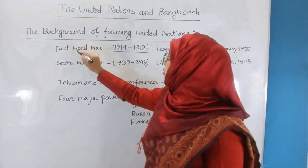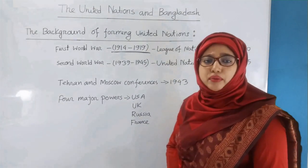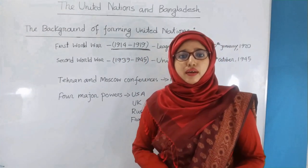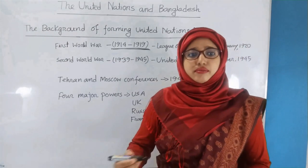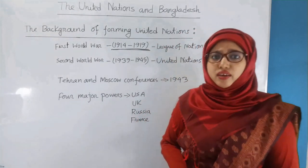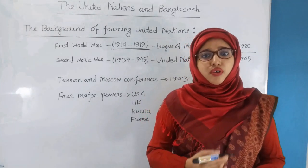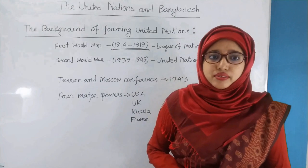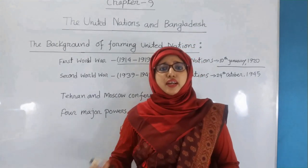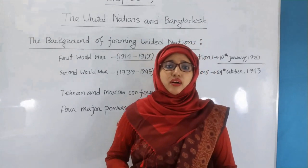The First World War lasted from 1914 to 1919. People observed huge devastation during this period. Consequently, the peace-loving people formed the League of Nations on 10th January 1920. The League of Nations was formed in order to maintain international peace and security. But the onset of World War II showed that the League of Nations had failed to maintain world peace due to its organizational weaknesses and other vulnerabilities.